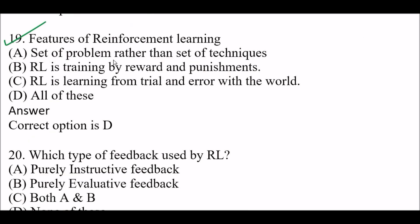Features of reinforcement learning — Option A: Set of problems rather than set of techniques. Option B: RL is training by reward and punishment. Option C: RL is learning from trial and error with the world. Option D: All of these. Right answer is Option D — all of these. RL features include being a set of problems rather than techniques, training by reward and punishment, and learning from trial and error.